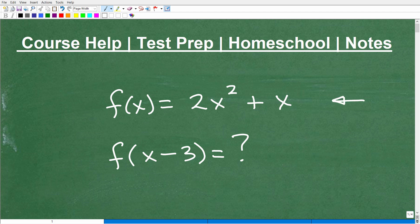Okay, so what do we got here? Well, this is called a function, and the name of this function is f, or we would say this is f of x. And this particular function is f of x is equal to 2x squared plus x.